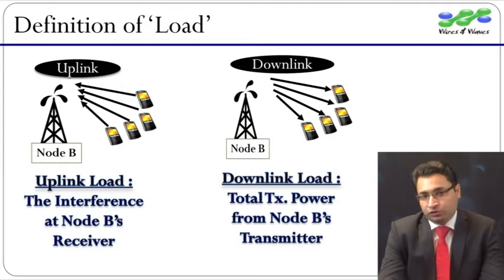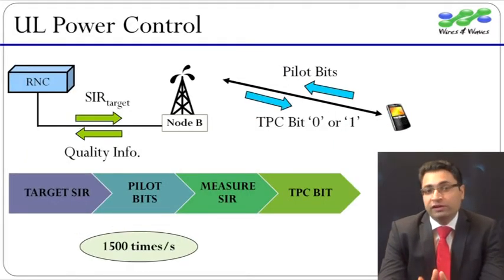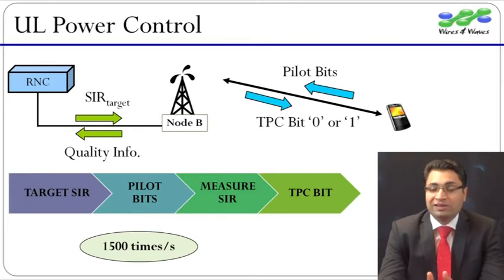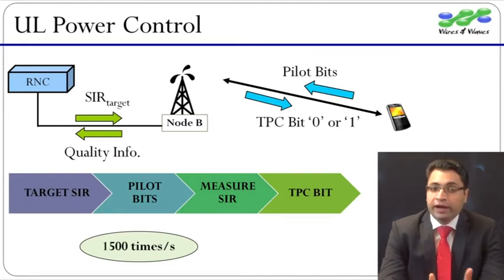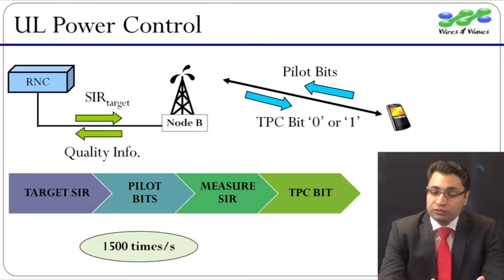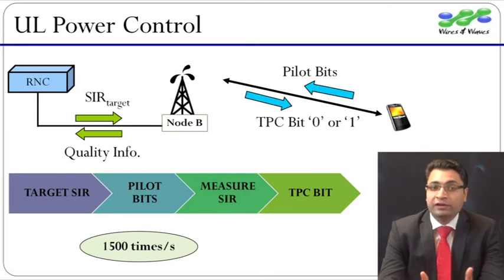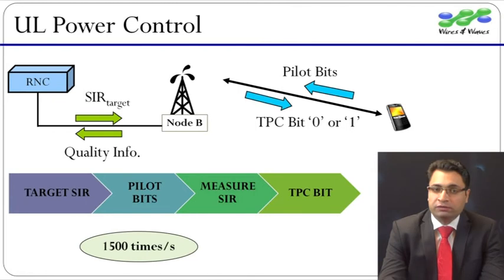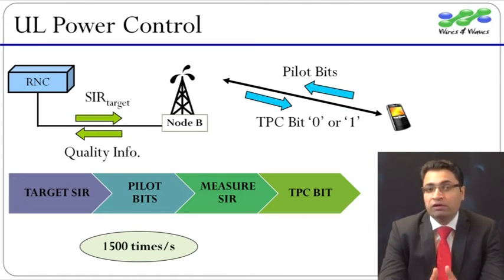We will discuss only the uplink power control here. The operation starts as soon as a DCH channel is established for the UE. The RNC informs Node B about the desired signal-to-interference ratio, known as the SIR target. In uplink, the UE keeps sending special bits called pilot bits, which are already known to Node B. Therefore, Node B can measure the signal-to-interference ratio and compare this measured SIR with the target SIR. Based on this comparison, Node B will signal a zero or one bit to the UE using the downlink TPC command. According to the received TPC bit, the UE will either increase or decrease its transmit power by a pre-negotiated step, and the next uplink transmission will be at the modified power level. This procedure takes place exactly 1500 times per second, which is why power control in UMTS is also called fast power control.